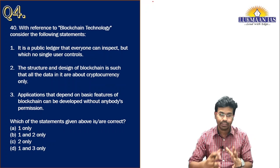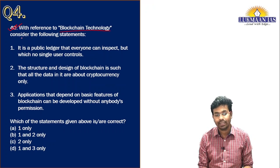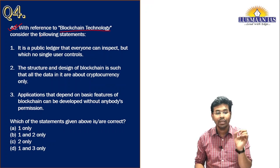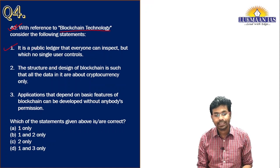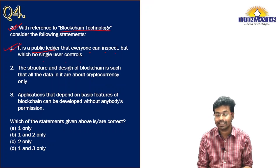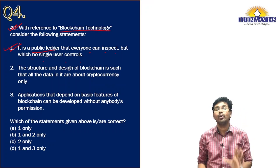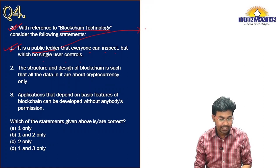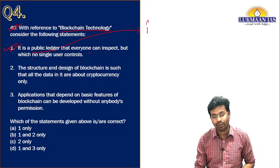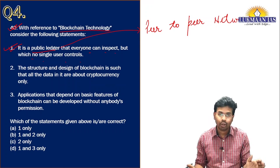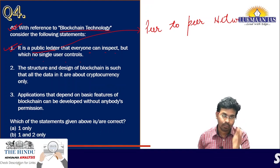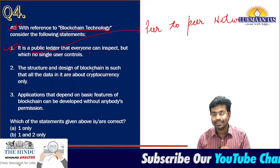Now let us move to the next question about blockchain technology. The question asks: with reference to blockchain technology, consider the following statements. Statement one says it is a public ledger that everyone can inspect, but with no single user control. Yes, this is the unique distinguishing feature of blockchain technology — it uses peer-to-peer networking and there is no central authority to control it.